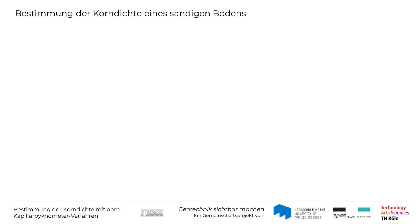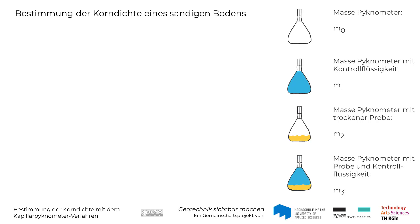Gehen wir nun gemeinsam ein Beispiel zur Bestimmung der Korndichte an einer trockenen Bodenprobe durch. Es soll die Korndichte einer sandigen Bodenprobe bestimmt werden. Zunächst werden die Referenzmessungen durchgeführt: Die Masse M0 des leeren Pygnometers wurde zu 48,08 g bestimmt, die Masse des Pygnometers vollständig mit Kontrollflüssigkeit gefüllt zu M1 gleich 147,72 g.